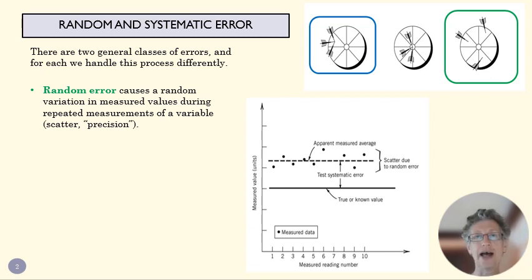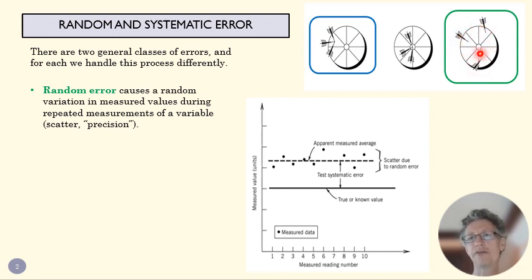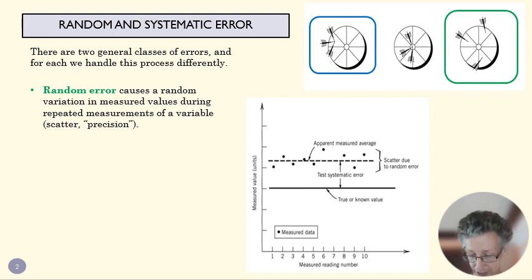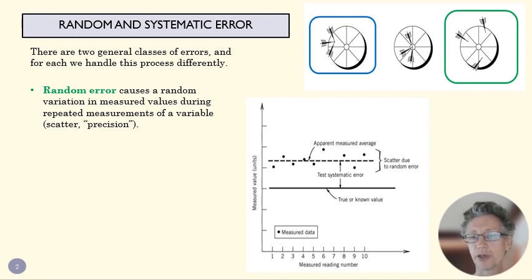That difference is random error, and it's sometimes called scatter. You can see a nice image of scatter here — this is the true mean value of something I'm measuring, and measurements are sort of scattered around that bullseye. We sometimes call that precision too. If I have a very precise measurement, that scatter is going to be very small.